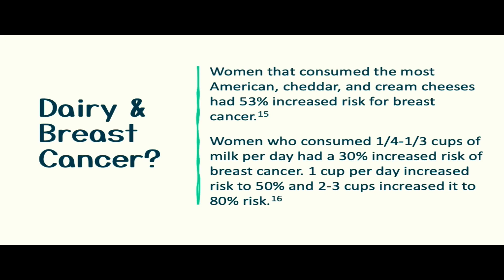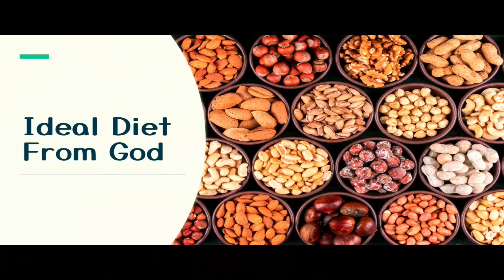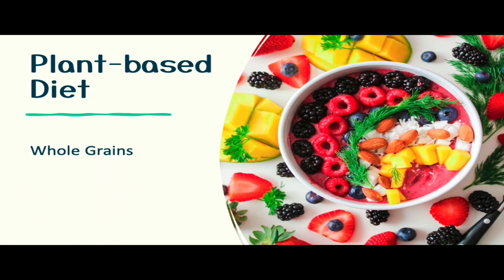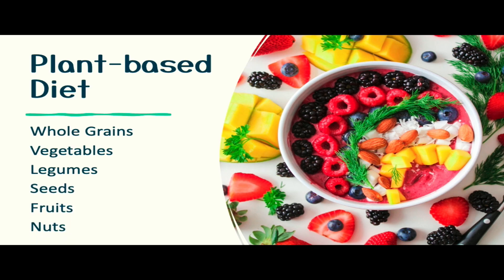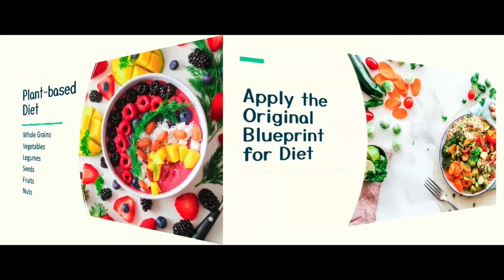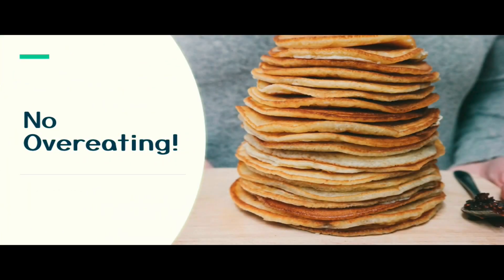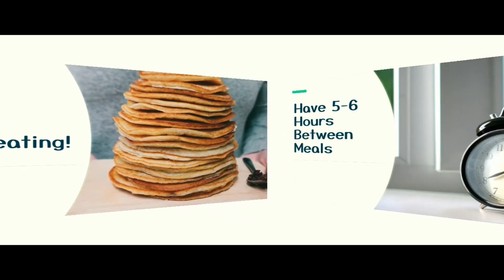So what can we eat that gives us the nutrients we need while decreasing our risk for disease? God's ideal diet — a whole food, plant-based diet — includes whole grains, vegetables, legumes (beans, peas, and lentils), seeds, fruits, and nuts. This is the diet God planned for our greatest health. All the nutrients we need come from these categories without bad side effects. Here are six simple tips for good nutrition. Number one: apply the original blueprint for diet.